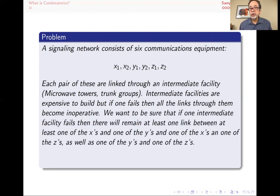So we want to be sure that if one of the intermediate facilities fails, we are okay with some of the links failing, but we have some very specific requirements that we want to be met. We want at least one of the x's and one of the y's to be connected. The x's are sort of the same kind of thing. The y's are the same kind of thing, and the z's the same. We want one of the x's and one of the z's be connected. One of the y's, one of the z's, and one of the x's.